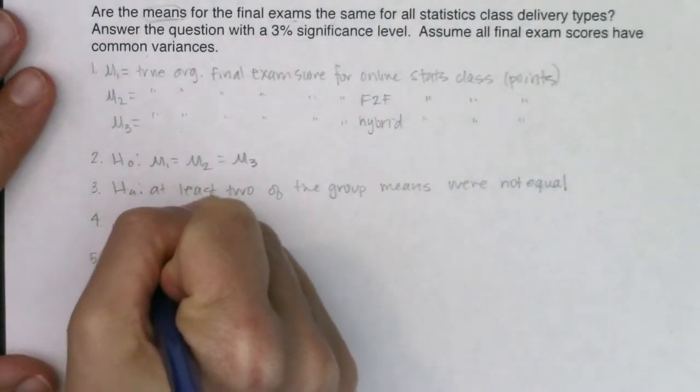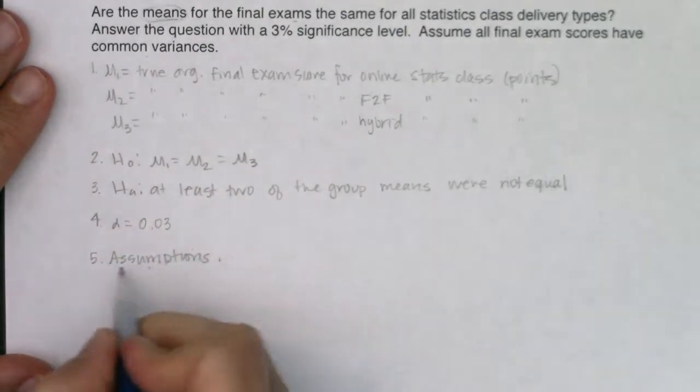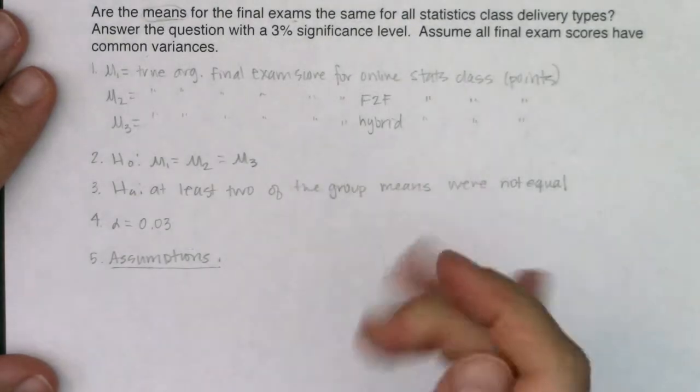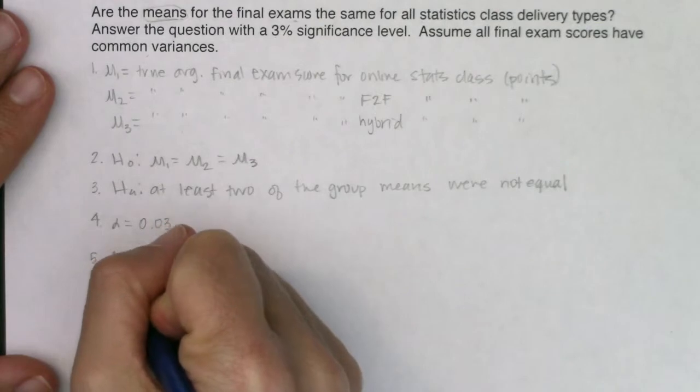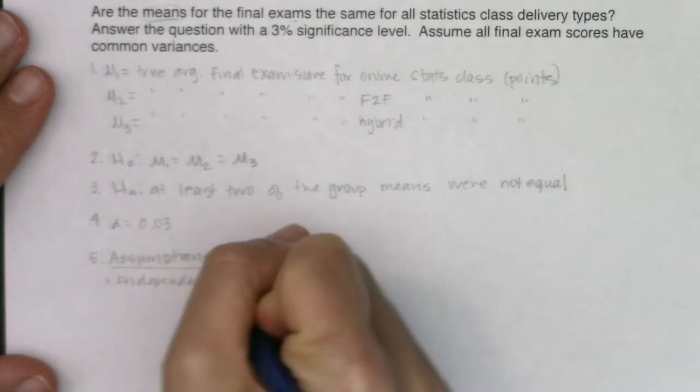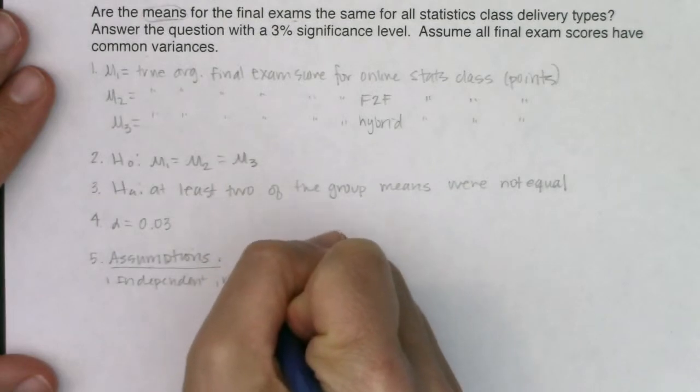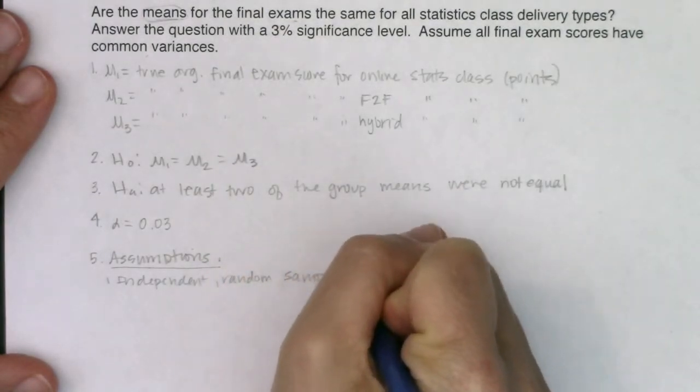So for my assumptions, I would need independent random samples. And it did say I had random samples. And I'm going to assume that since these are different students in each of these classes, that they're independent as well. So I have independent random samples.